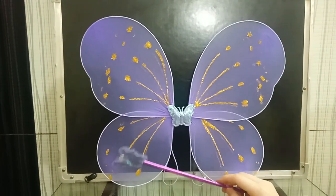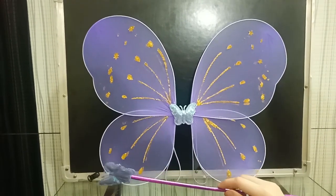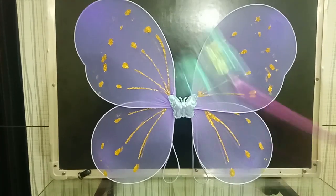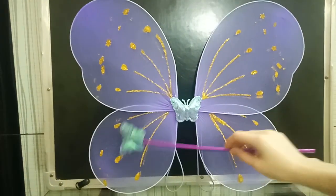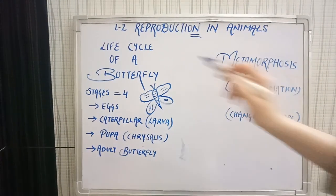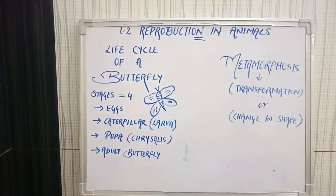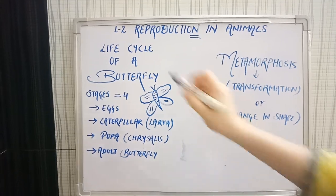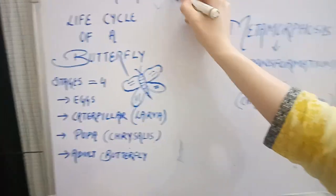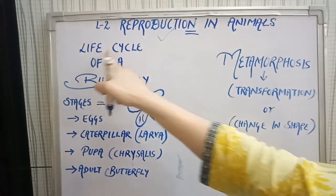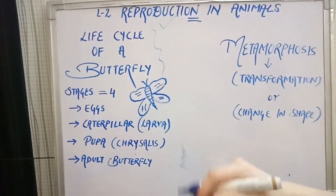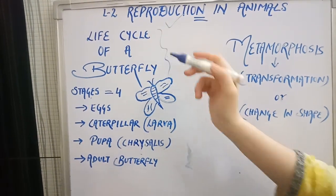Butterflies taste with their feet. They live on a liquid diet called nectar, collected from flowers. They also have four colored wings. This topic — the life cycle of a butterfly — is from Chapter 2: Reproduction in Animals, and it is our last topic of this particular chapter.